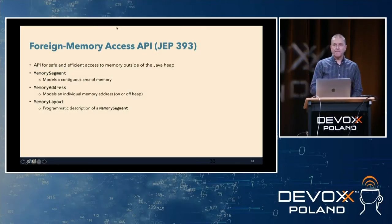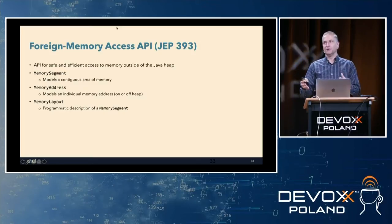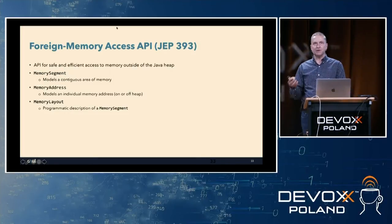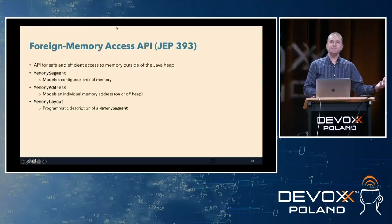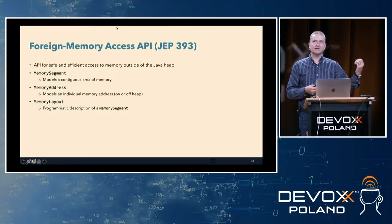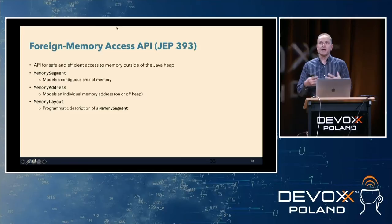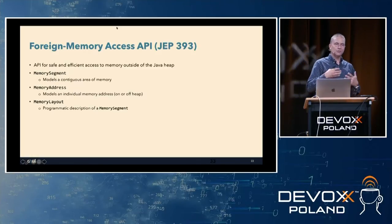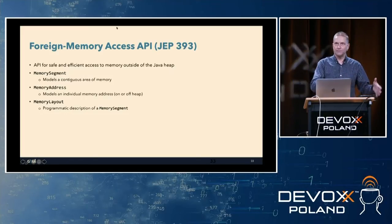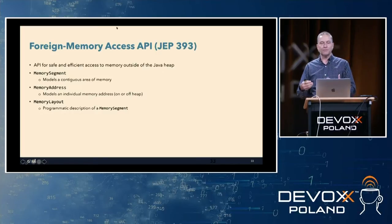There is the Foreign Memory Access API. The idea behind this is to give you the ability to access memory that is not on heap. In Java, we have the idea of implicit versus explicit pointers. Unlike in C and C++, where a pointer really is a number referring to an address in memory, in Java we have implicit pointers — references to objects — and we don't know where they actually are. But there are situations where, for certain applications, it is useful to access memory outside of the heap. For example, writing applications using shared memory between multiple processes.